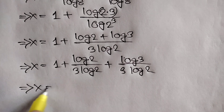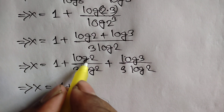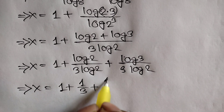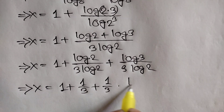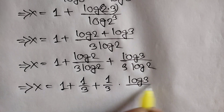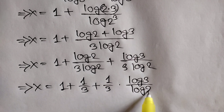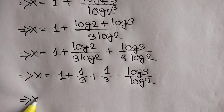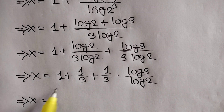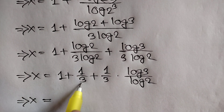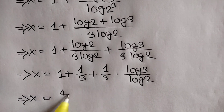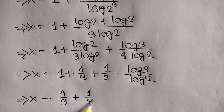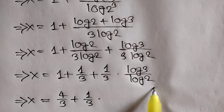Or x is equal to 1 plus log of 2 cancelled with log of 2, so it will be remaining 1 over 3, plus 1 over 3 times log of 3 over log of 2. Or x is equal to 1 plus 1 over 3, that means 4 over 3, plus 1 over 3 times...